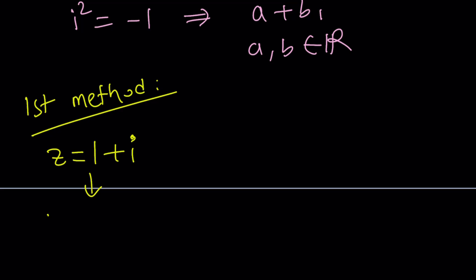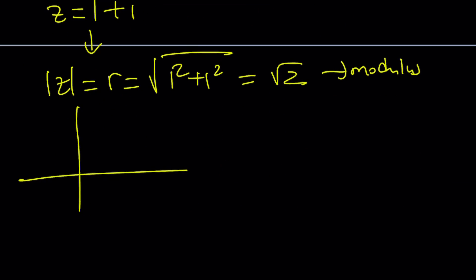I'm going to find the absolute value of z, which is also called r, which is the square root of 1 squared plus 1 squared, and that will be square root of 2. That is called the modulus, also the absolute value. So if you graph this, then it's going to represent the distance from 0.